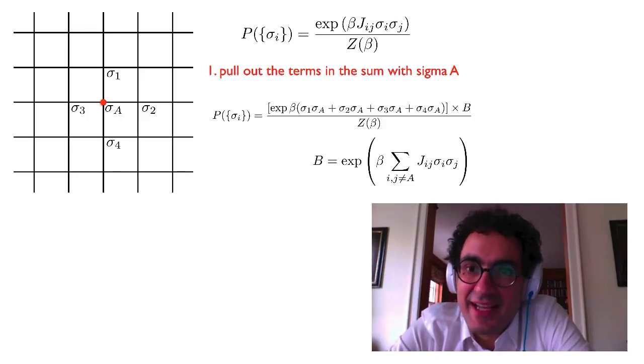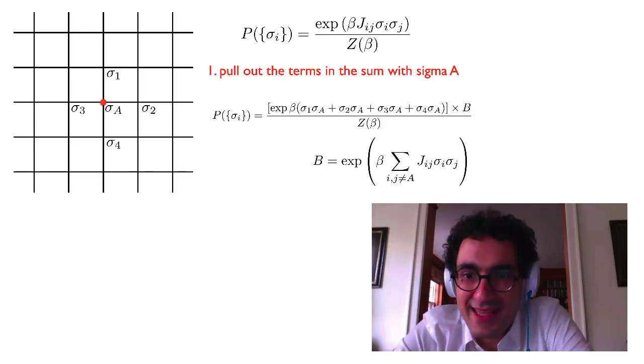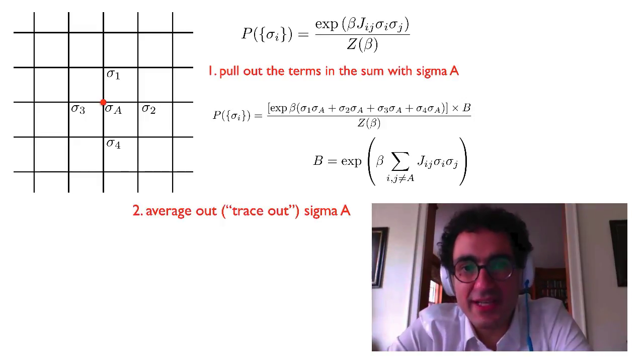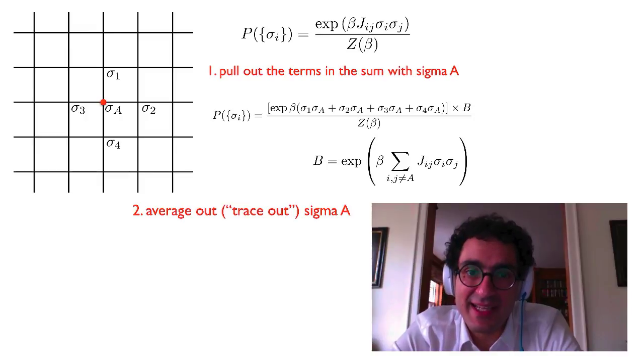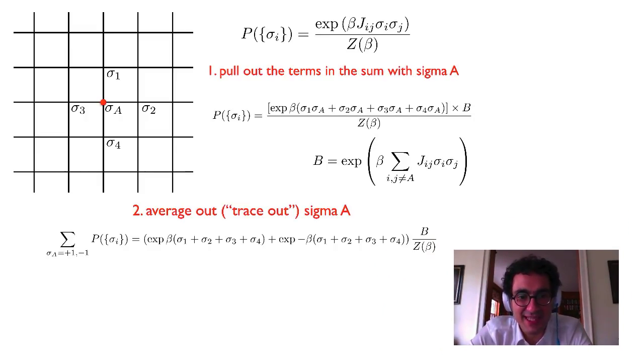That b there, as I said, is the exponential that doesn't include any terms with sigma a in them. Okay. Then what we're going to do is we're going to just average over sigma a, the physicists would call tracing out. So we're going to take that probability distribution and simply sum it over the two possible states of sigma a. And when we do that, it ends up looking like this. And these two terms are the sum of two exponentials times the b over z beta term. The b is that product there that involves everything other than sigma a. And the z beta, that's that normalization. And what you see, it's very simple. You have the exponential of beta times sigma 1 plus sigma 2 plus sigma 3 plus sigma 4 plus the exponential of the negative of that. And that's just taking care of the fact that sigma a is either in the plus 1 state or the minus 1 state.